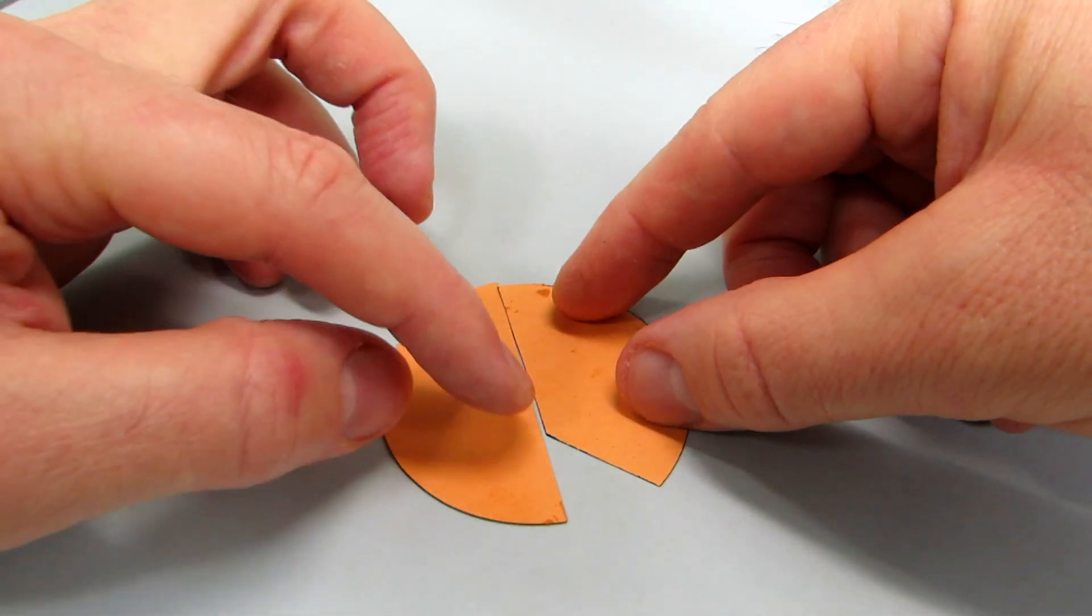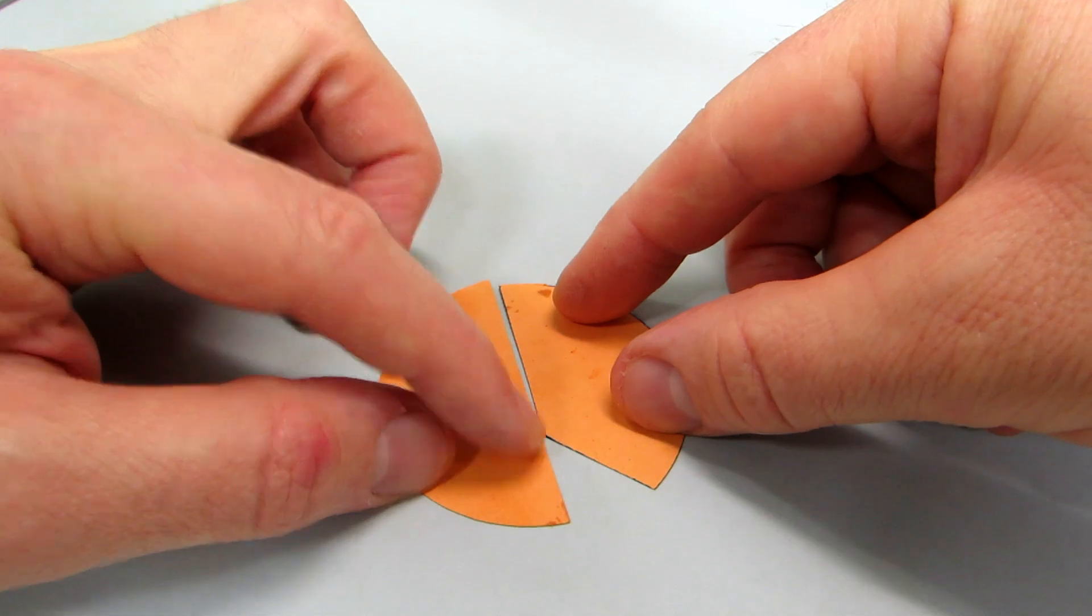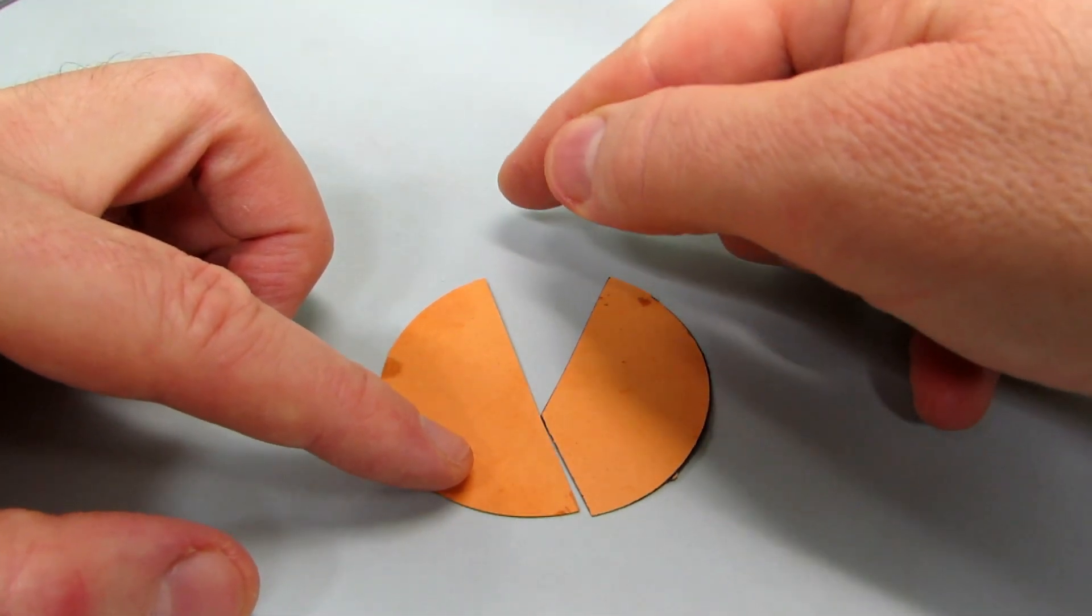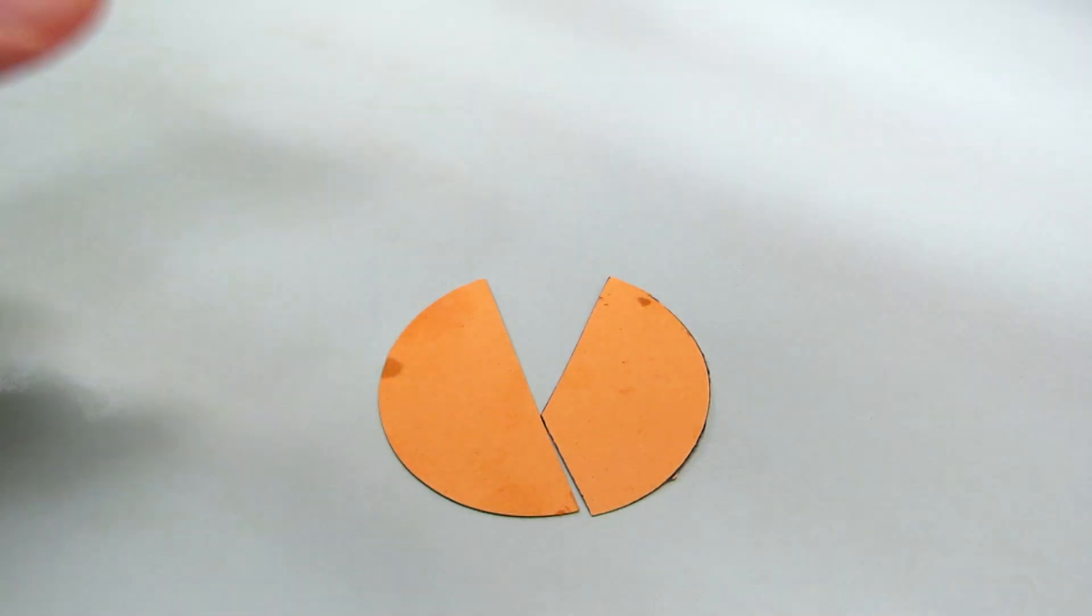When you turn it in the other direction, it will pivot around this point, and expand here and clamp itself into the thread. That's all.